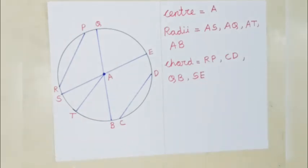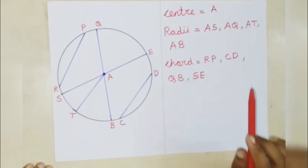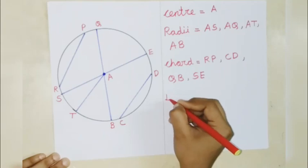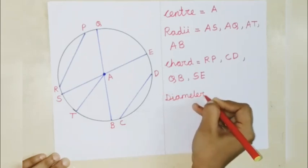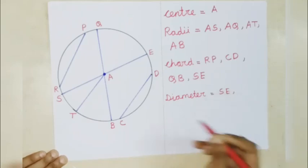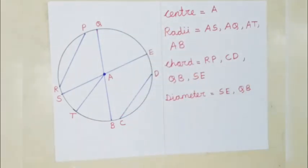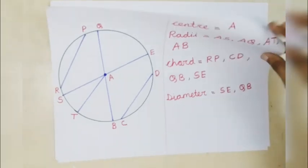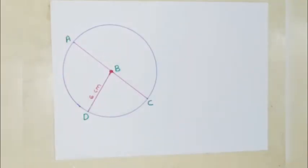After that, diameter. The diameters are SE and QB. So children, from the figure, you can find center, radii, chord, and diameter. Chord and diameter are interconnected — diameter is the largest chord of a circle. In the same way, radius and diameter are also connected.